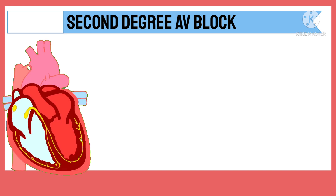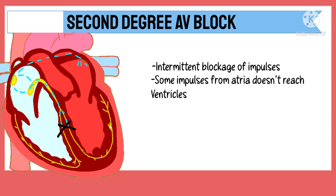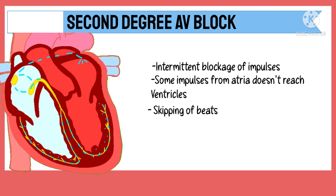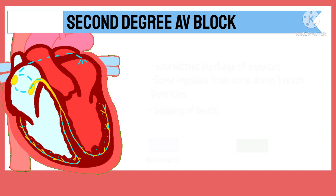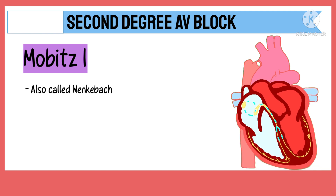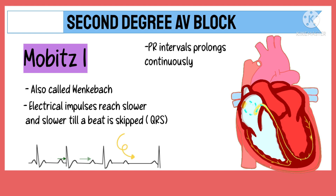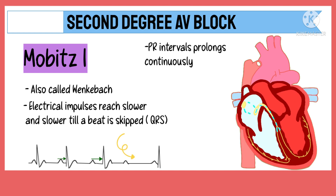In 2nd degree AV blocks, there is an intermittent blockage of impulses wherein some impulses from the atria do not reach the ventricles. Thus, there is a skipping of beats in this type of AV block. The 2nd degree AV blocks are further divided into two types, namely Mobitz 1 and Mobitz 2. Mobitz 1 is also called Wenckebach and is a type where electrical impulses reach slower and slower until the heart actually skips a beat. Thus, the PR interval prolongs continuously until a beat is dropped, i.e., the QRS complex. This usually occurs as a result of progressive fatigue of the AV nodal cells.